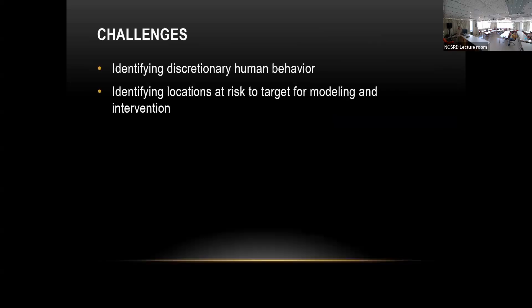Let me talk about the limitations of simulation. One limitation is identifying discretionary human behavior. For example, if you have a food court with two restaurants, the pedestrian dynamics doesn't tell you which fast food place they will go to.